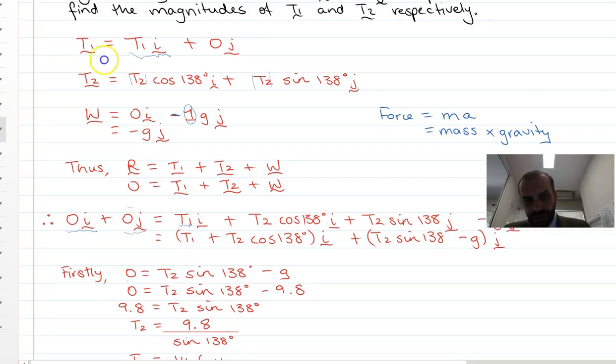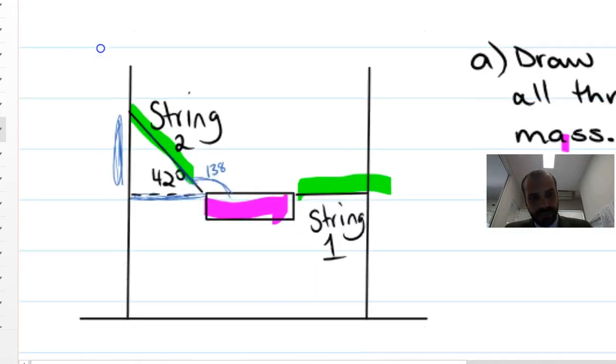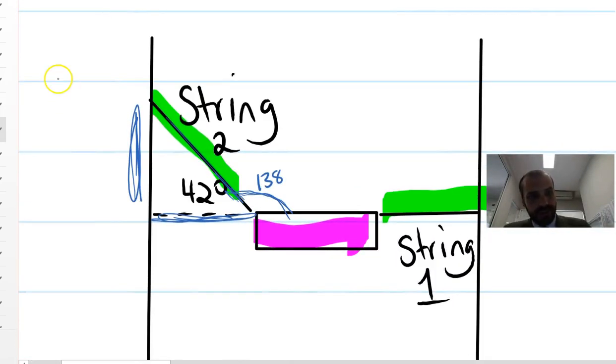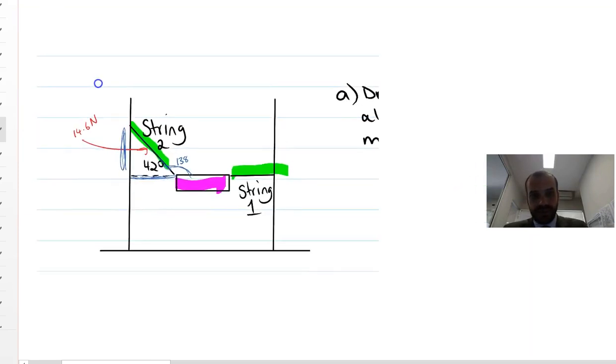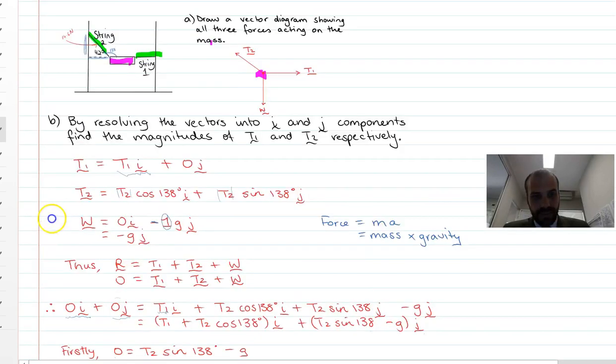So what does that mean? Scrolling back, 14.6 newtons. That's tension 2. Alright.